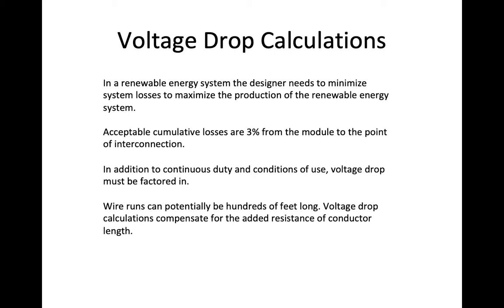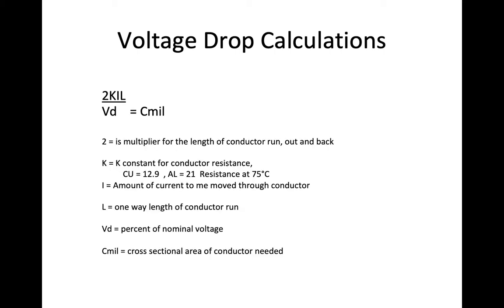So, this is the process. The formula is 2KIL over Vd equals Cmil. I'm going to put into this formula the parameters for my system. What am I trying to do? What is the voltage I'm trying to get from point A to point B? What is the current? What is the distance? And the end result will be the cross-sectional area, or the diameter, measured in Cmils.